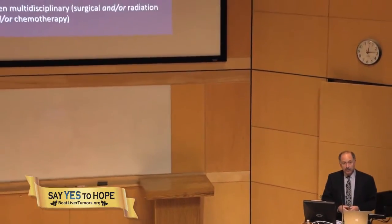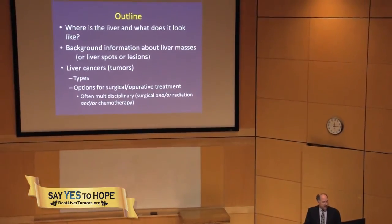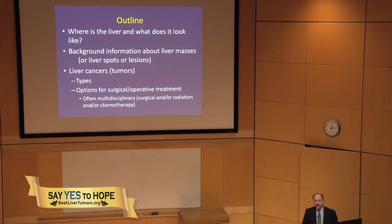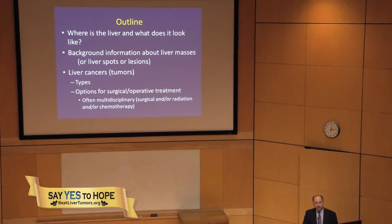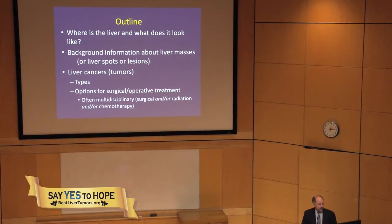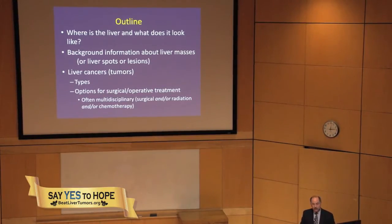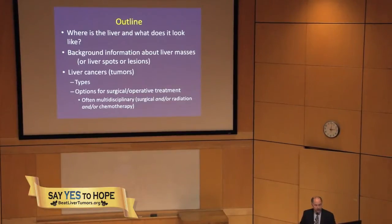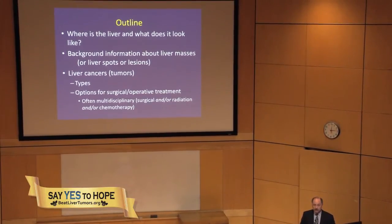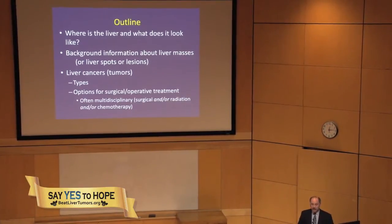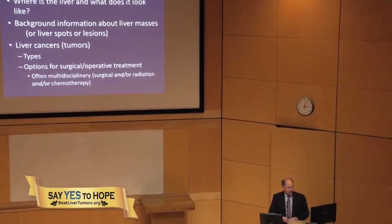The outline of what I want to discuss includes where the liver is and what it looks like, some general background information about liver masses or liver spots or lesions — there are many different terms that medical providers and lay people use. Then more specific issues about liver cancers, the types, and the options for surgical treatment. These treatments are often multidisciplinary — not just surgery, but also radiation and medical oncology with chemotherapy or a variety of modalities.